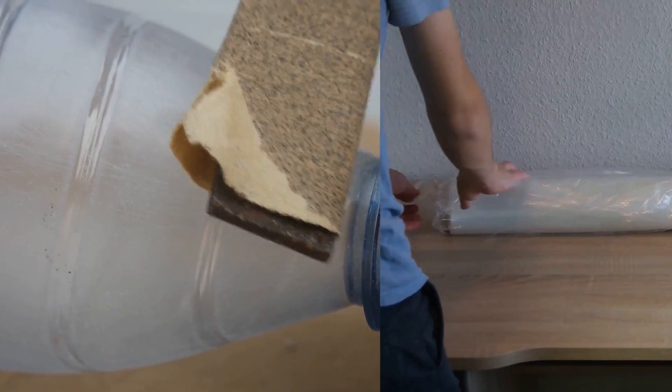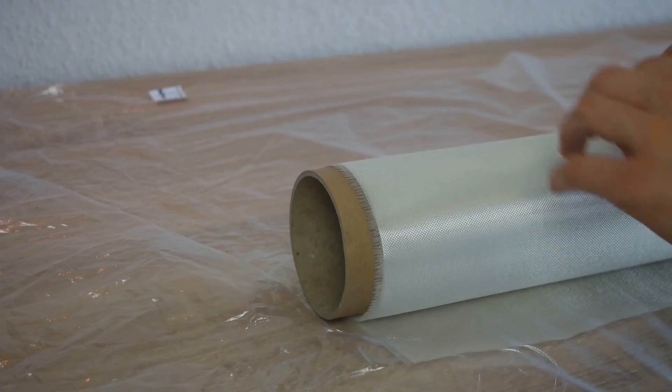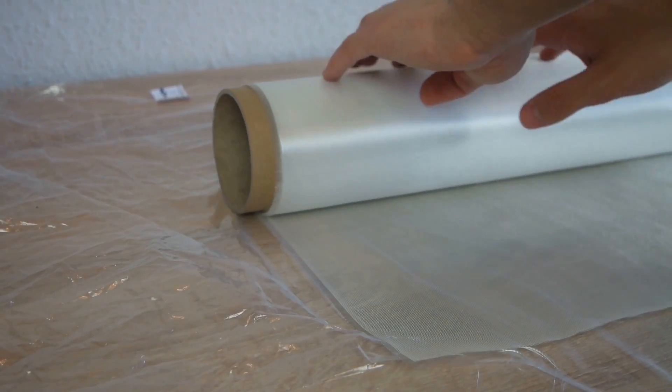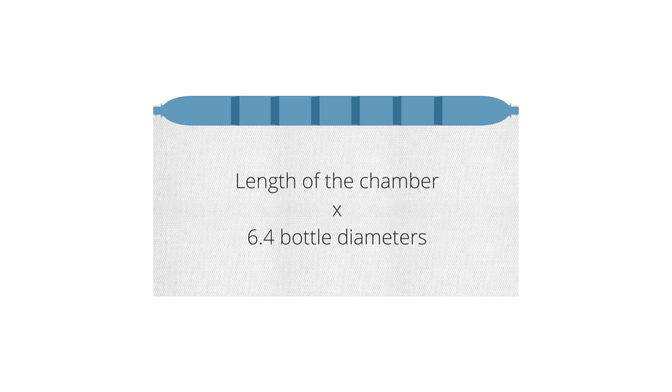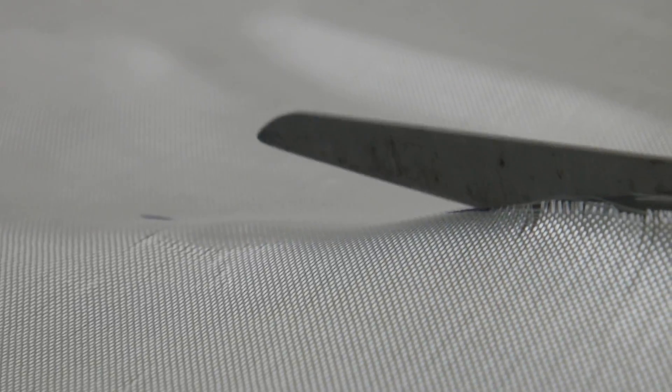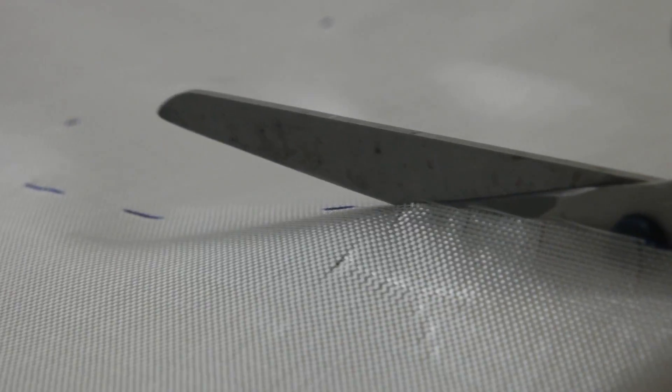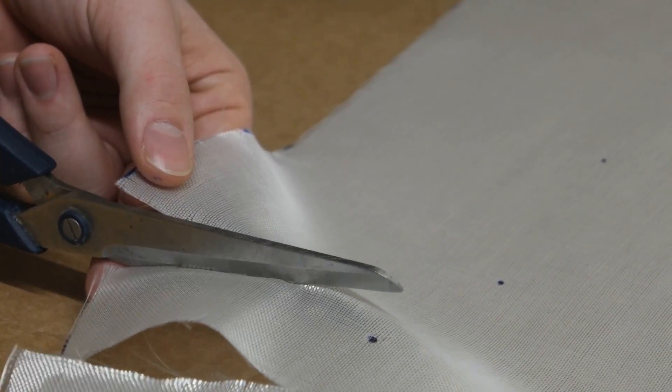To start with the reinforcement of your pressure vessel, you have to cut the fiberglass to size. We recommend using two layers of fiberglass. That means that the textile has to be wrapped two times around the chamber. Thus the dimensions of the required fiberglass are length of the chamber by 6.4 bottle diameters. Be very careful when cutting the fiberglass because you do not want to pull out fibers from the cloth. At both ends of the fiberglass we cut in little stripes so that the reinforcement can fit tightly at the ends of the pressure vessel.